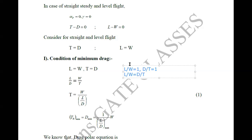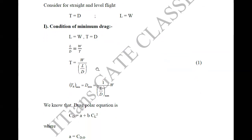For thrust required to be minimum — that is, for drag to be minimum — L/D should be maximum. So the condition for minimum drag is that the lift-to-drag ratio must be maximized.